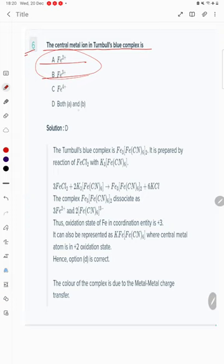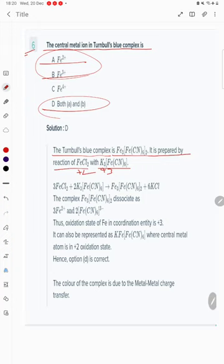The Turnbull's blue complex, Fe3[Fe(CN)6]2, is prepared by the reaction of FeCl2 with K3[Fe(CN)6]. So here the +3 is there and here is +2. You can see both options A and B are correct.